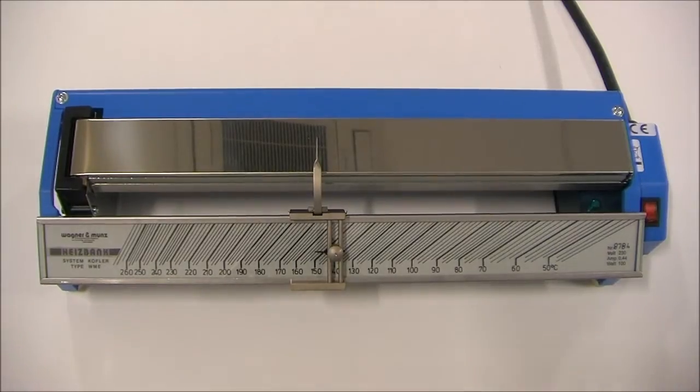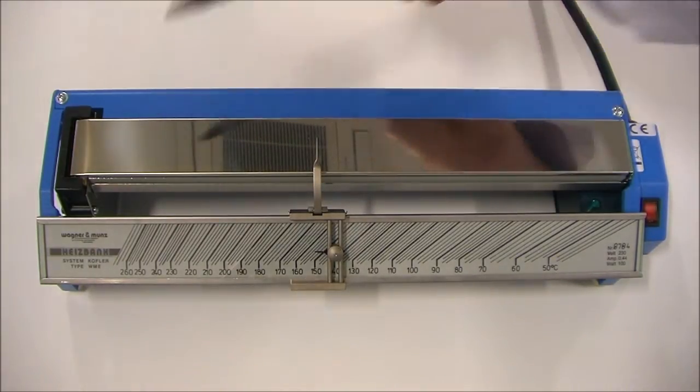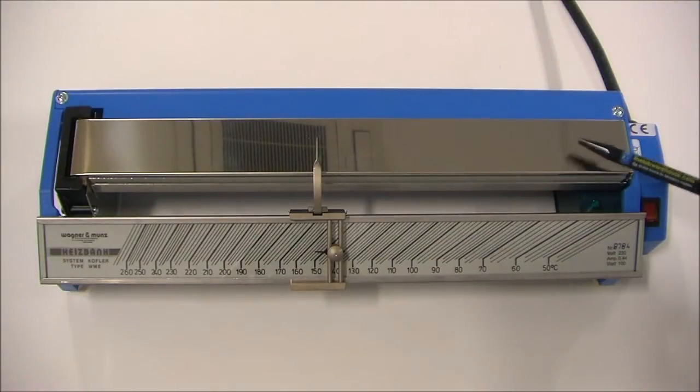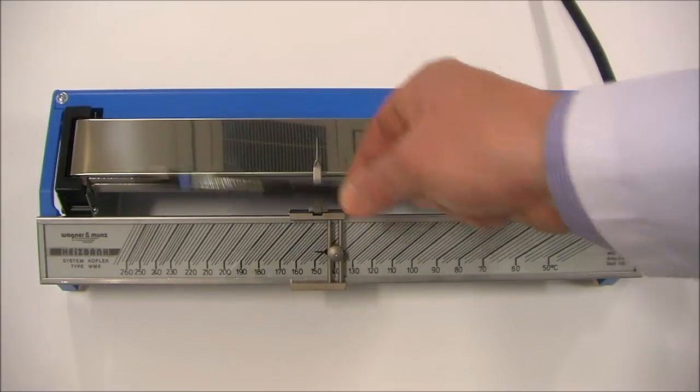The Koffler Hot Bench works like this. This section here is a graduated hot plate. The temperature range is 50 degrees C at this end, up to 260 degrees at this end.